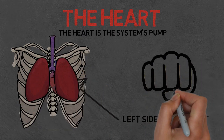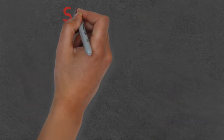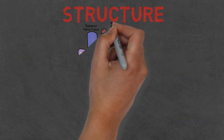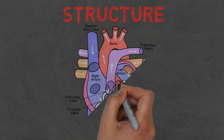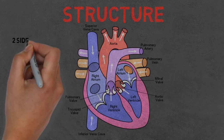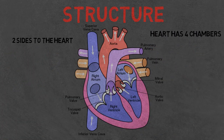The heart has two sides, a left side and a right side. If you look at this diagram you'll also see the heart has four chambers — two atriums and two ventricles on either side. These play important roles in the pumping of blood around the body.